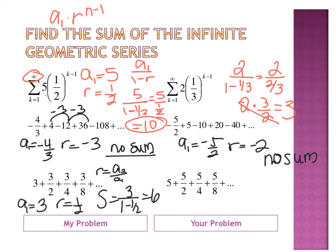And you can give the next one a try. What is my A1? What is my R? So 5 divided by 1 minus 1 half is 10.